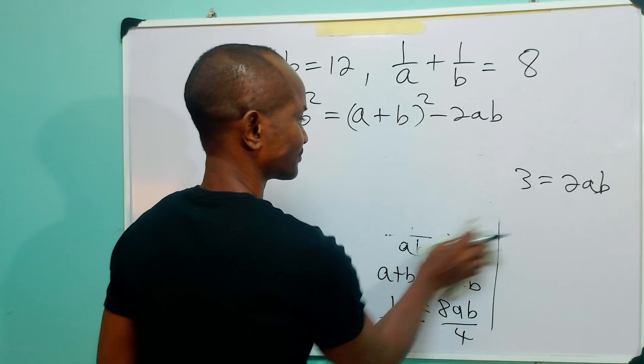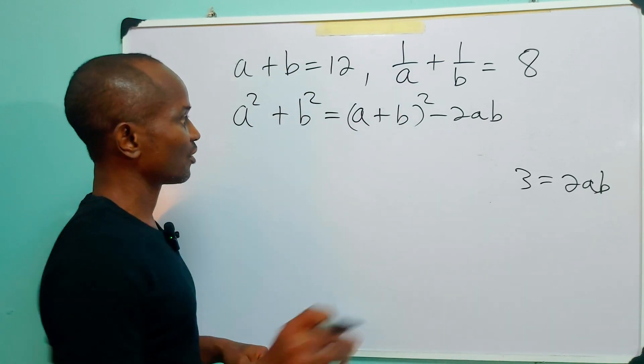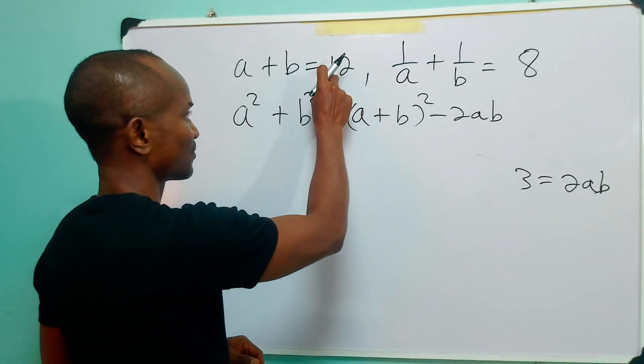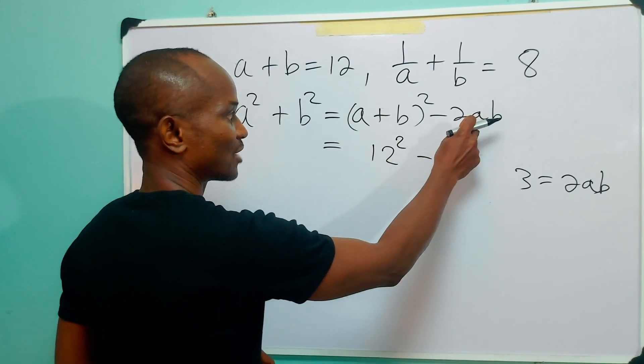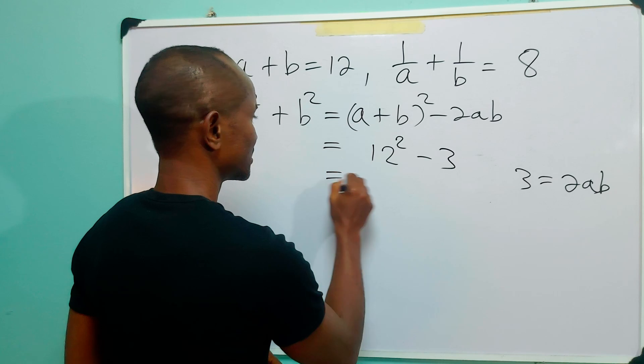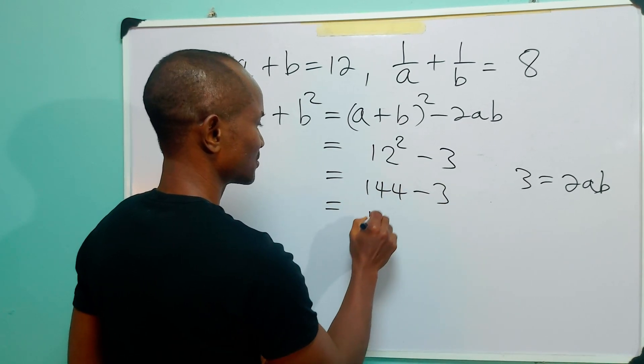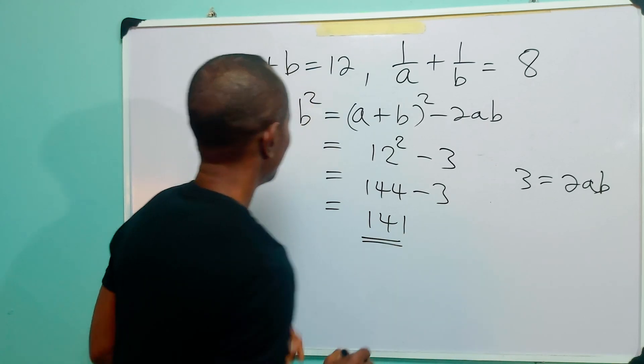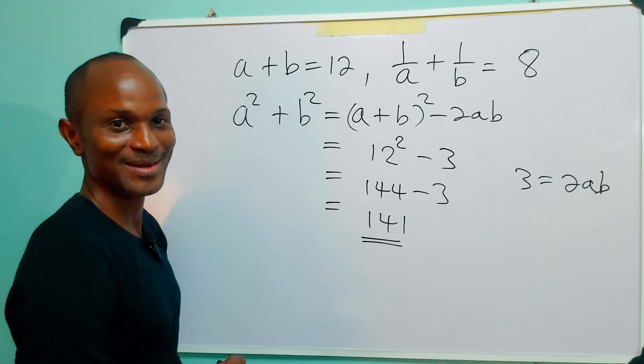Now we come back. We know that A plus B is equal to 12, so this is equal to 12 squared minus, and we know that 2AB is equal to 3. This is 144 minus 3, which is equal to 141. And that is the value of A squared plus B squared.